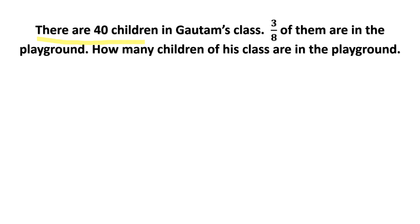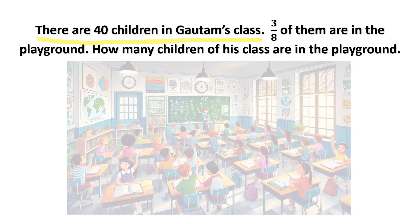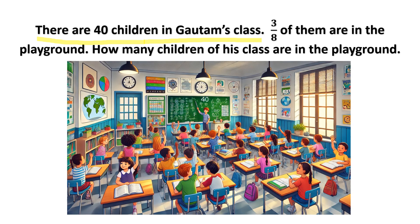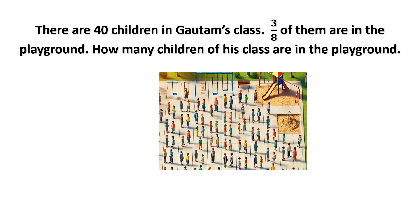The first line says there are 40 children in Gotham's class. So let us try to visualize that. Here is a classroom — this is Gotham's class and there are 40 children in the class. Now it says 3 by 8 of them are in the playground, so some children from Gotham's class are in the playground.